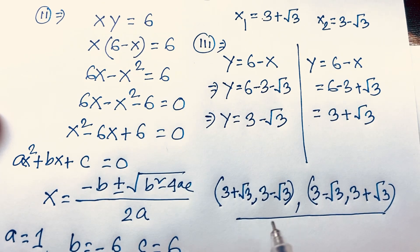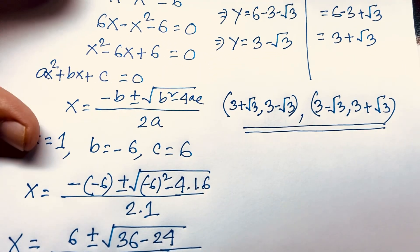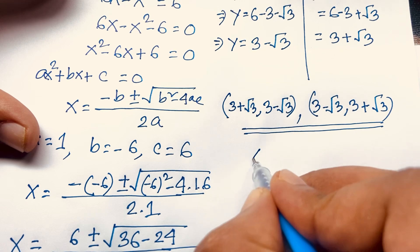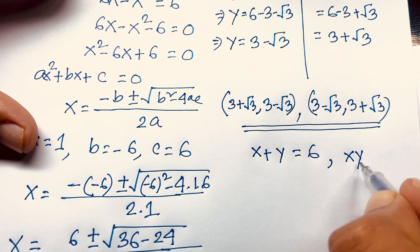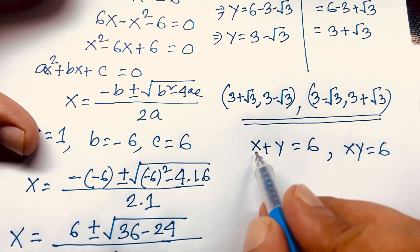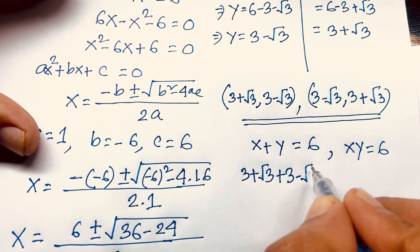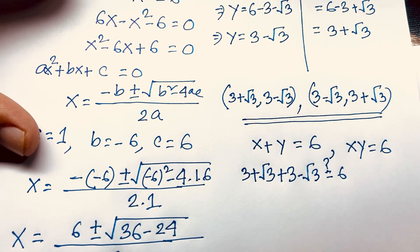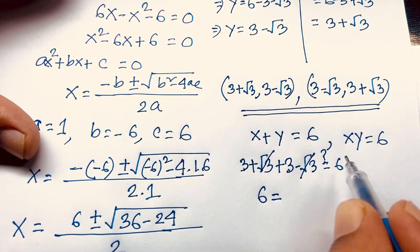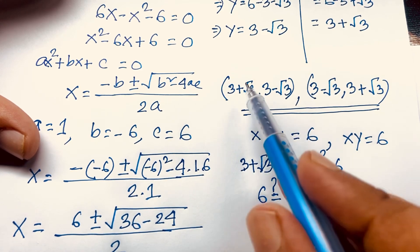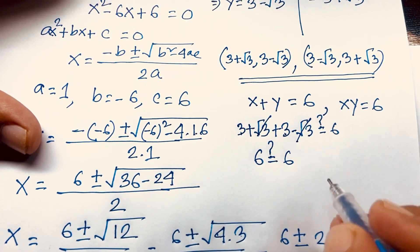Let's verify our answers. Checking x plus y equals 6: (3 plus root 3) plus (3 minus root 3) equals 6. The root 3 terms cancel, and 3 plus 3 equals 6. So x plus y equals 6 is confirmed.